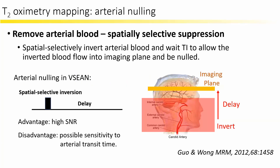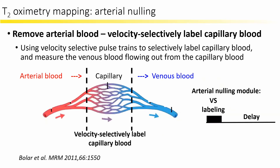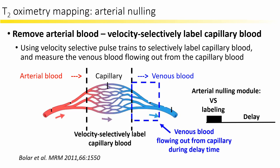After solving the tissue suppression problem, arterial blood suppression must be addressed. Dr. Guo and Wang used spatial selective inversion to invert upstream arterial blood. After a delay, the inverted arterial blood recovers to zero and flows into the imaging plane. This arterial nulling model is used in the VISION sequence and has high SNR, but may be sensitive to arterial transit time. To reduce dependence on arterial transit time, the velocity selective pulse can also be used to specifically label capillary blood, and after a delay, venous blood flowing out from the capillary is measured.